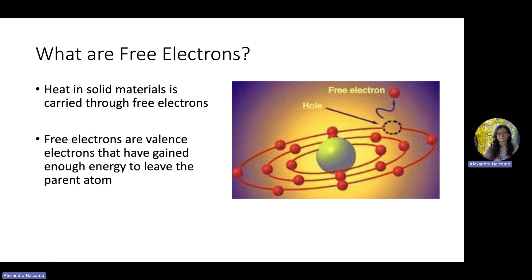Heat in a solid material is carried mainly through free electrons. The amount that free electrons are able to move through the material will determine how quickly the material is able to distribute heat.